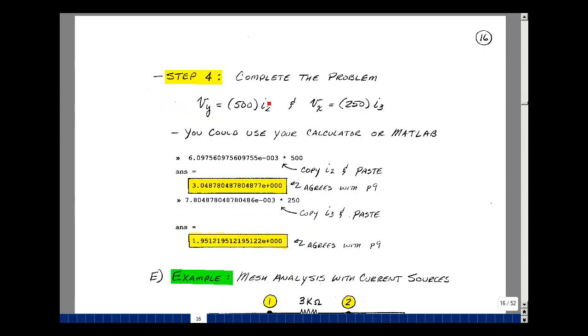And the last step in my algorithm would be to complete the problem. We said before that V sub Y was equal to 500 times the mesh current I2, and V sub X was 250 times the mesh current I3. I could take the results for I2 and I3 and just multiply them by 500 and 250, or you could just cut the answer out and paste it, and then multiply it by 500, and MATLAB will do it for you. And the value we get here agrees to what we had on page 9, but with a lot more places of accuracy. And likewise, to solve for V sub X, taking the current I3 and multiplying it by 250, we get this answer, and again, that agrees to what we had on page 9, but with a lot more places.